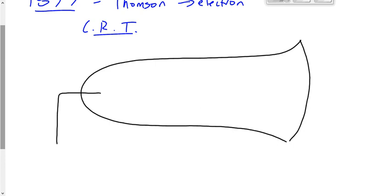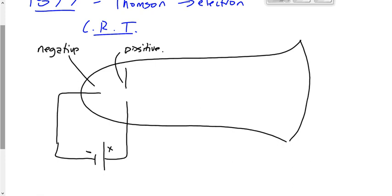Here's the cathode ray tube. It's an evacuated glass tube. It means all the air is sucked out of it. It's got two terminals. A negative terminal right here. The negative terminal, you can tell it's negative because it's closest to the negative side of the power supply. And then we've got the positive terminal over here.